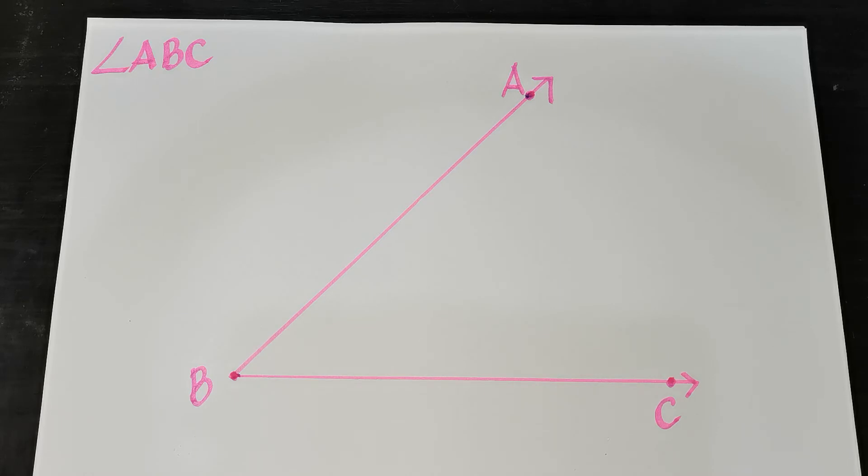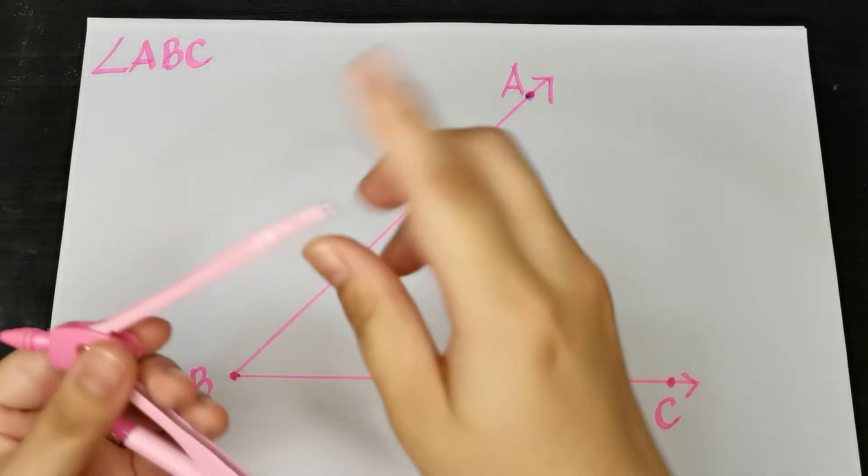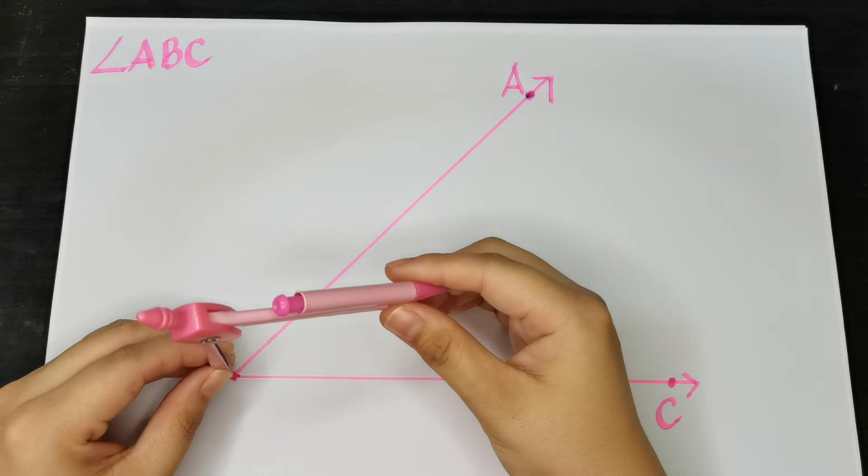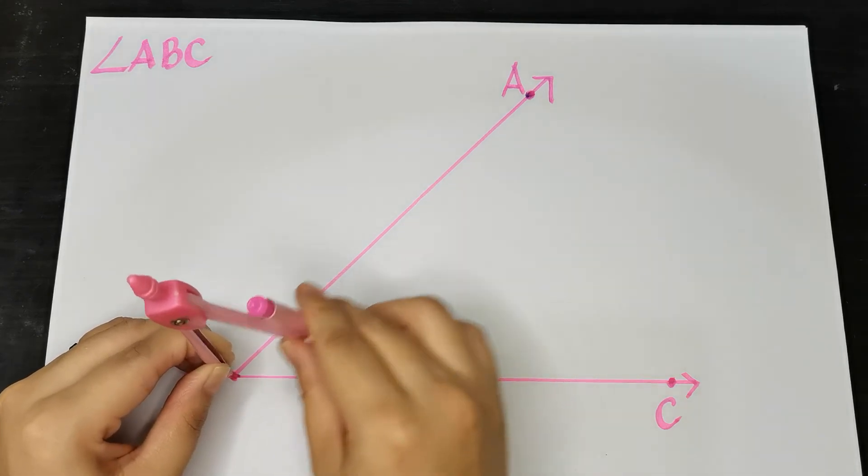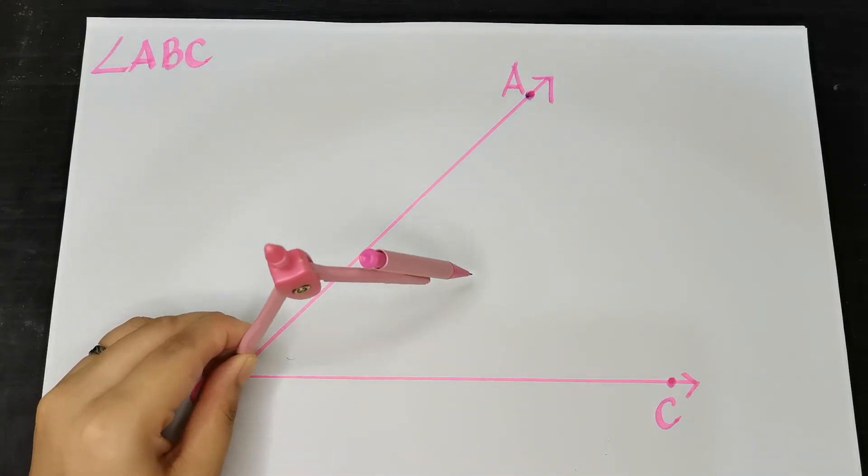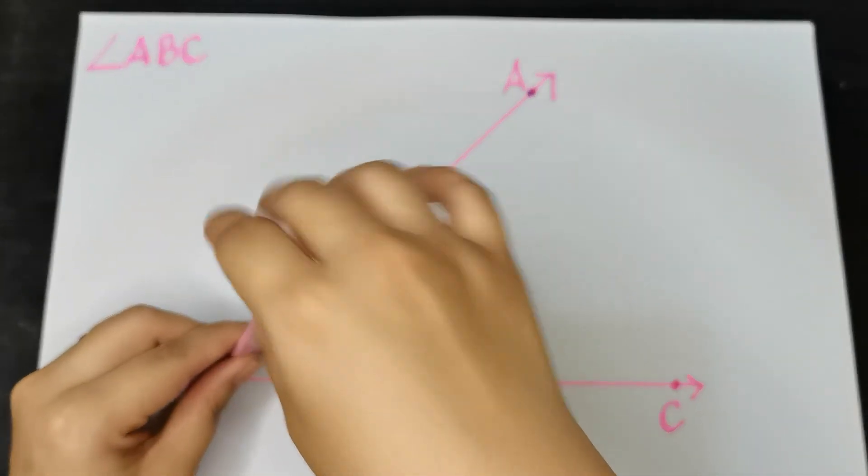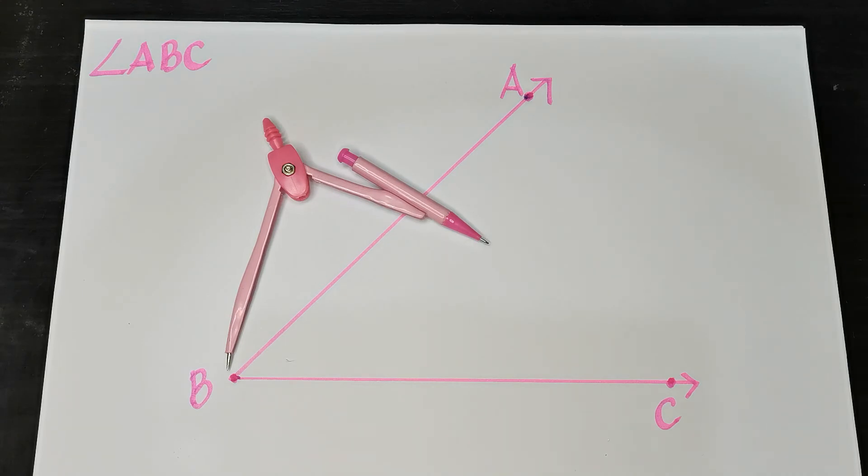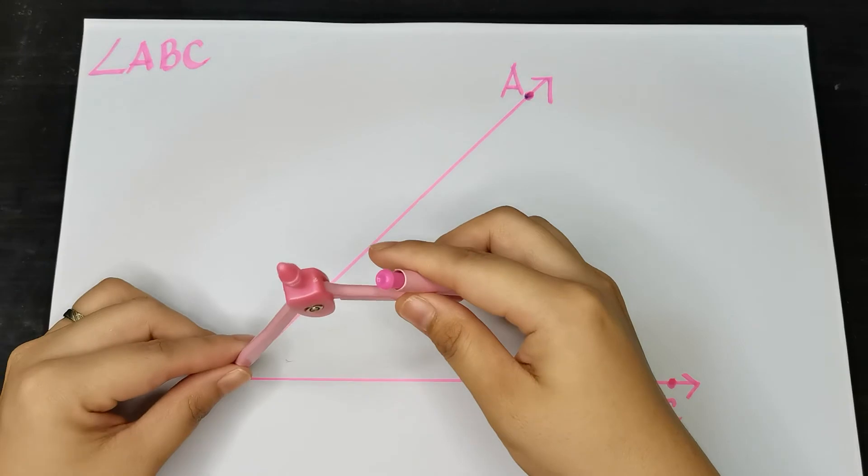Here are the steps. Step one: place the compass point on the vertex of the angle. Step two: stretch the compass to any length that will stay on the angle. Step three: swing or draw an arc that intersects this ray and this ray.